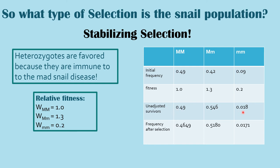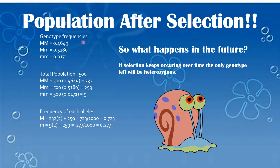Since these unadjusted values do not add up to 1, we have to add all three values together and divide each individual one by the sum of these three values. That gives us our frequency after selection. Here are the frequencies of the genotype after selection — the heterozygous frequency went up, as it should in stabilizing selection.